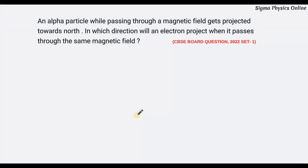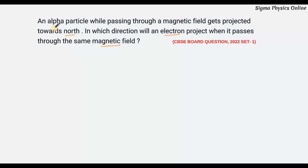Hello students, welcome back. Let's have a look at the next question. It's a question from magnetic effect of current and it reads like this: An alpha particle while passing through a magnetic field gets projected towards the north. In which direction will an electron project when it passes through the same magnetic field?